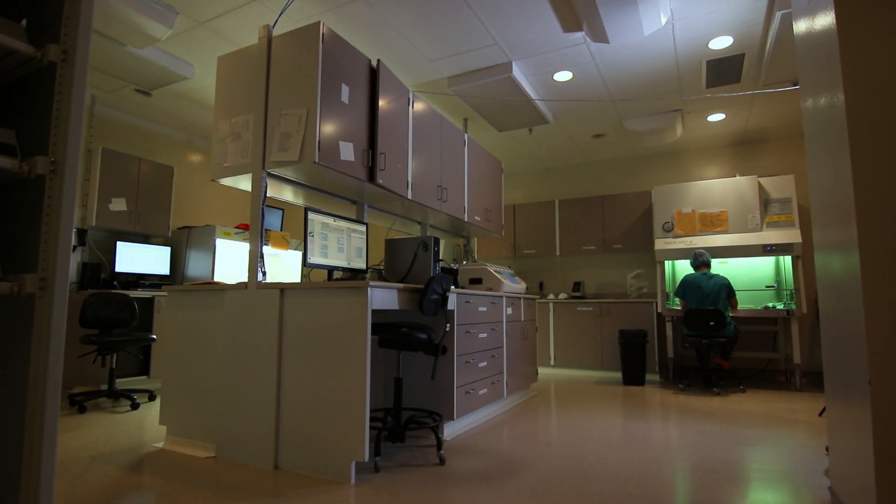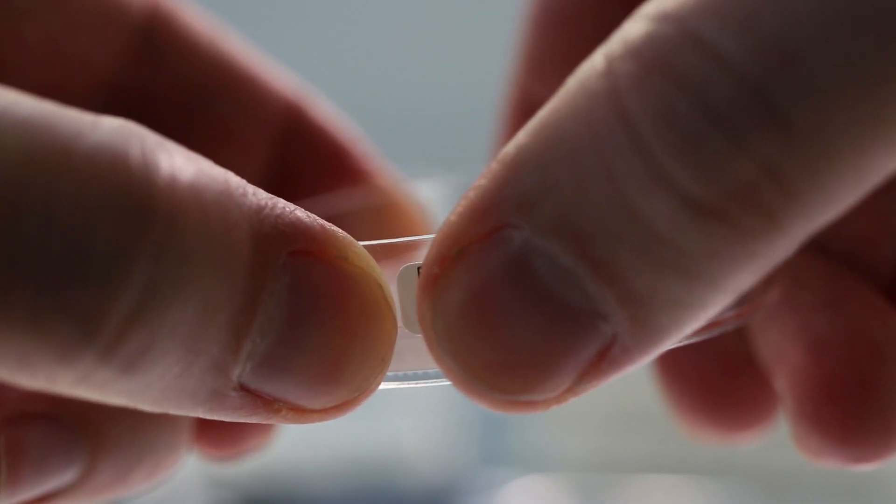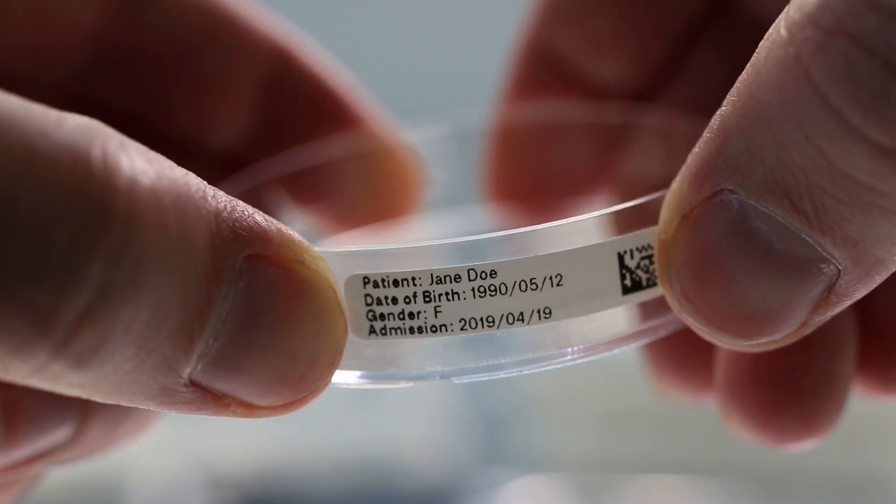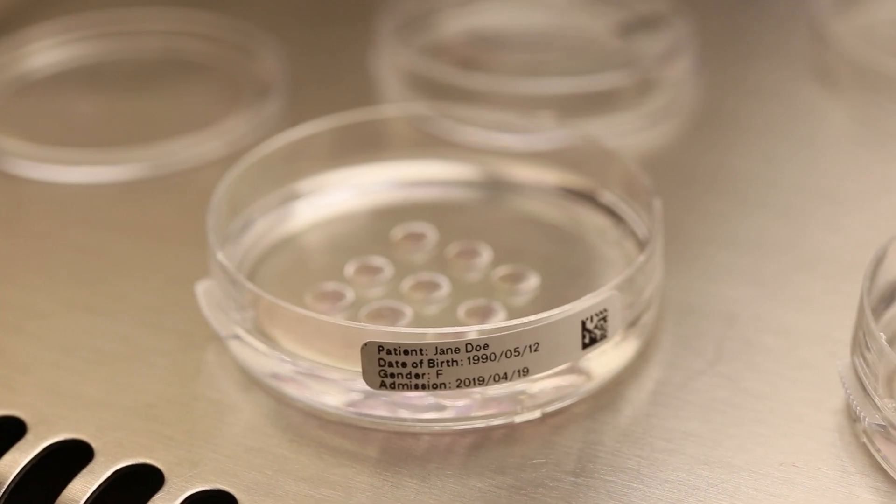In the embryology lab, labels are used to identify culture plates and dishes. This includes labels for the sides of plates or reverse printed clear labels applied to the bottom of plates that can be scanned and read from the top.